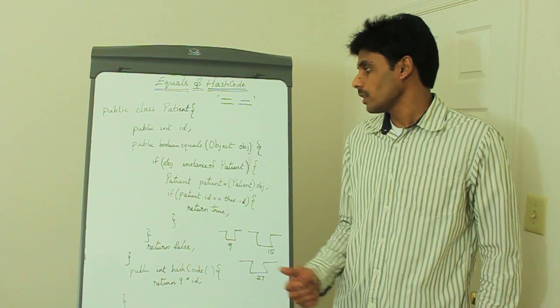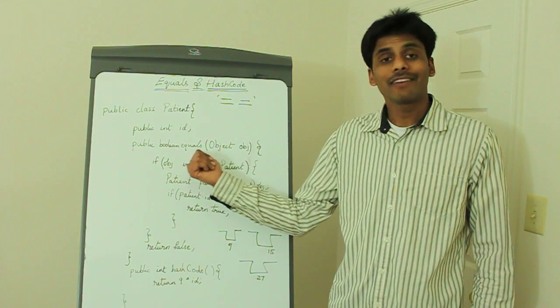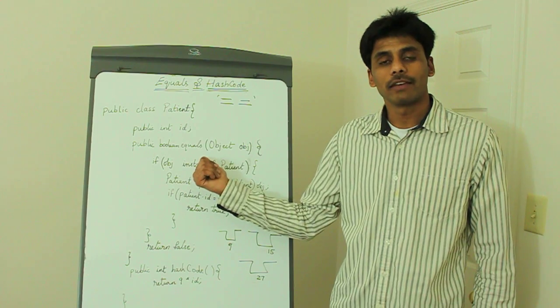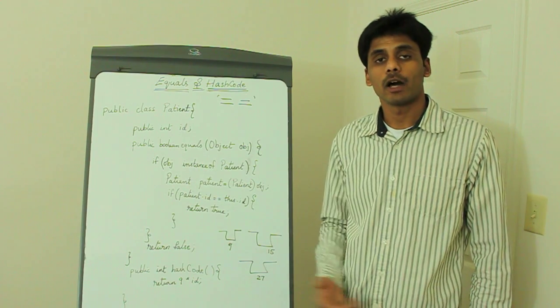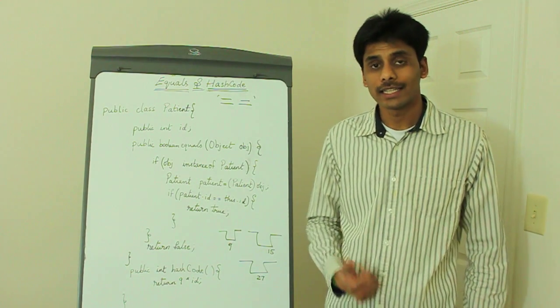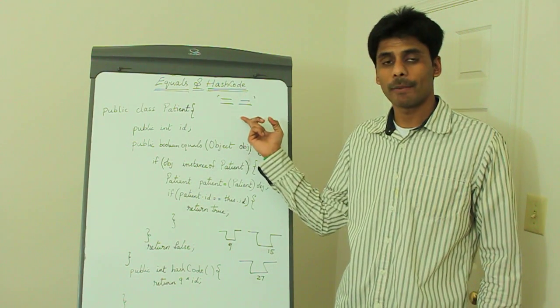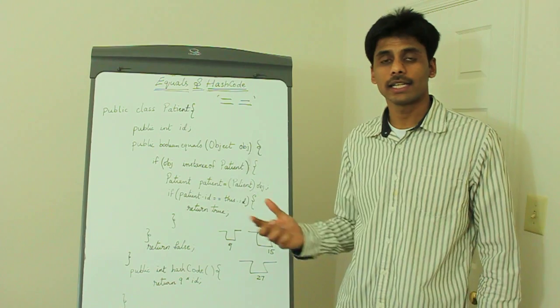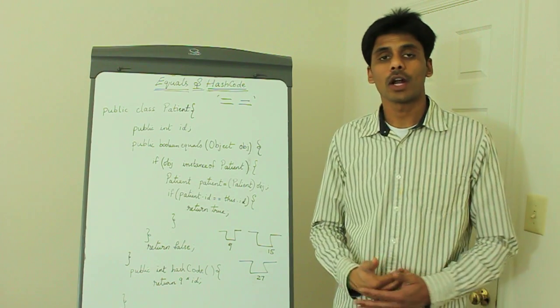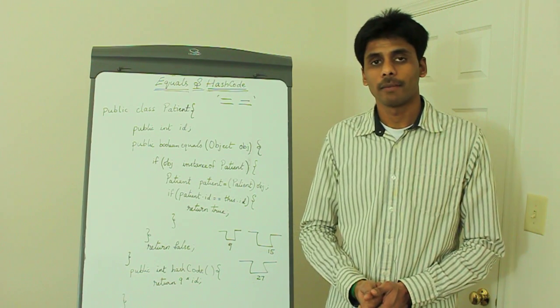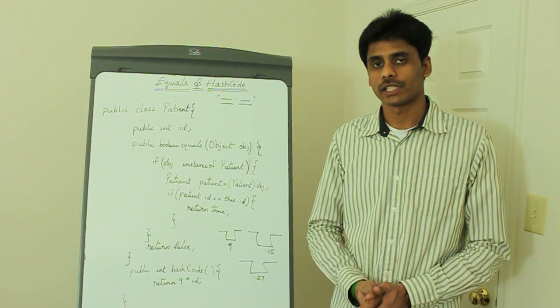Similarly, the default implementation of the equals method in the Object class does the same thing. It uses the double equals operator; as a result, it will not compare the contents but the references.